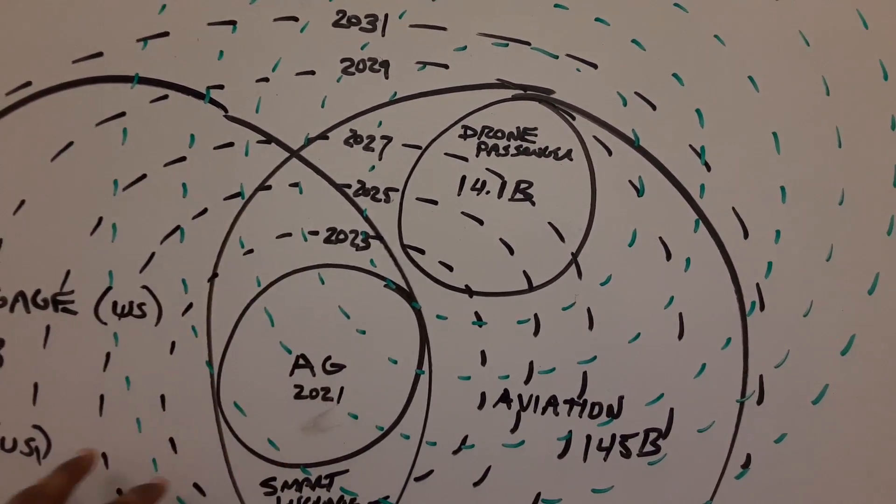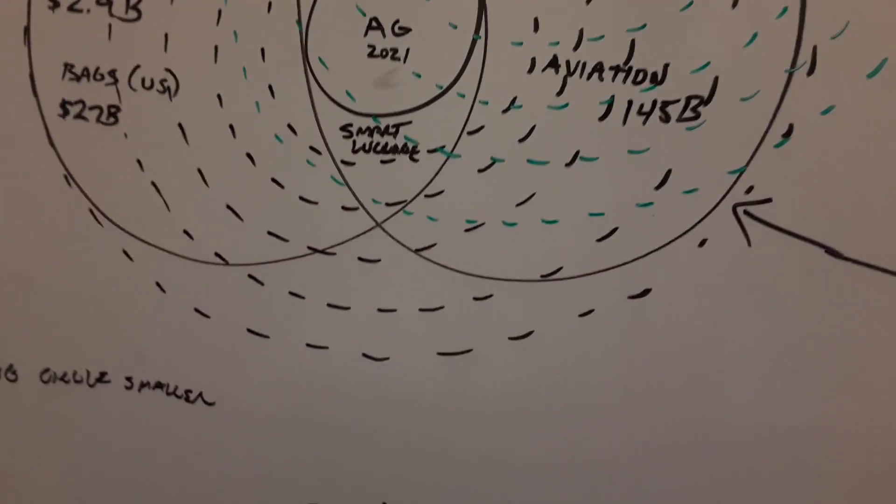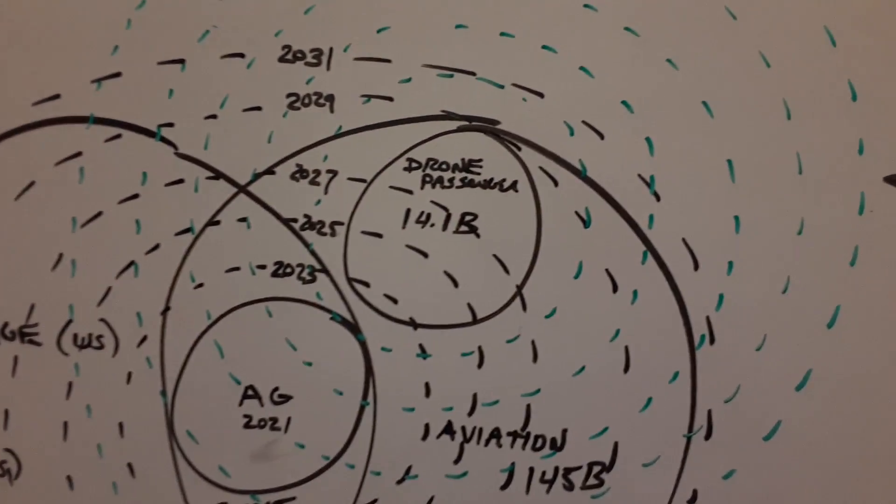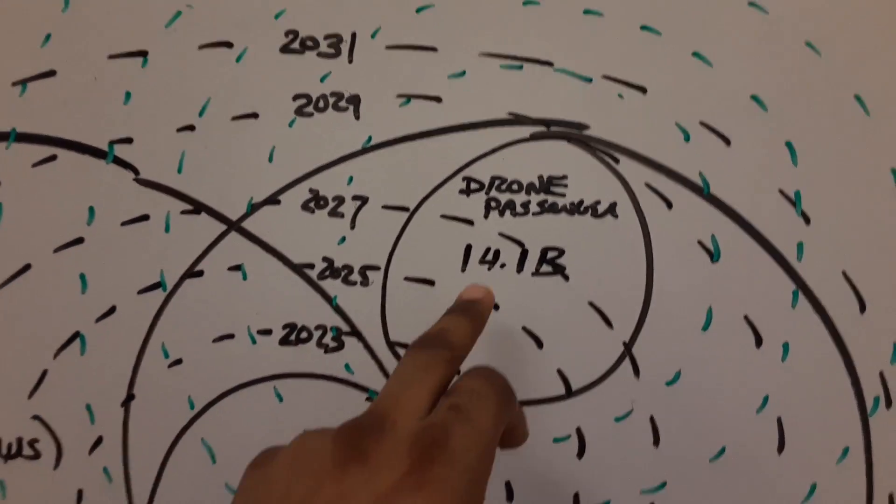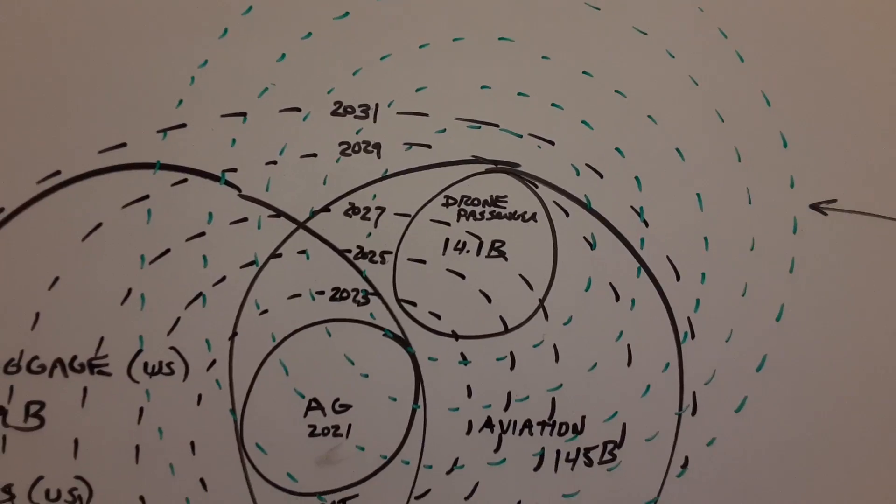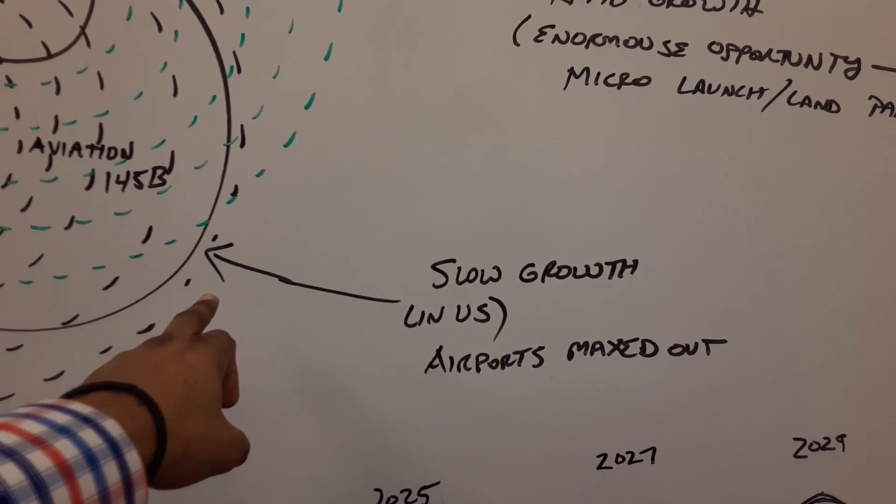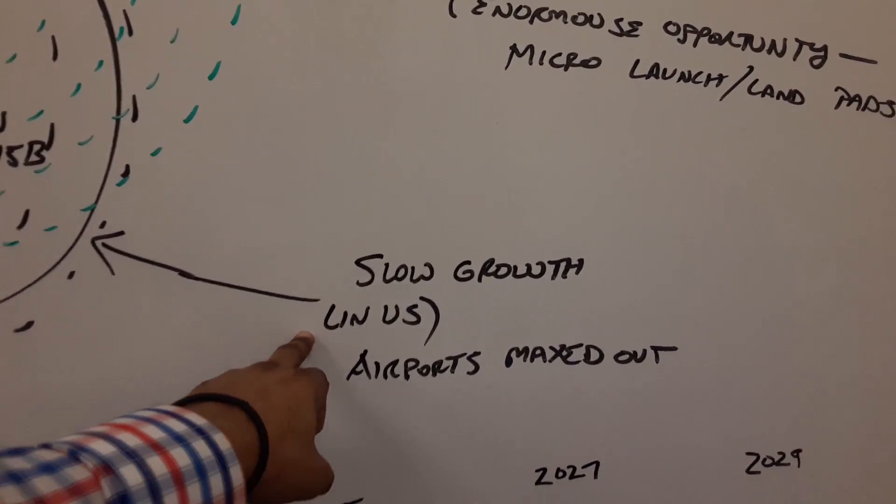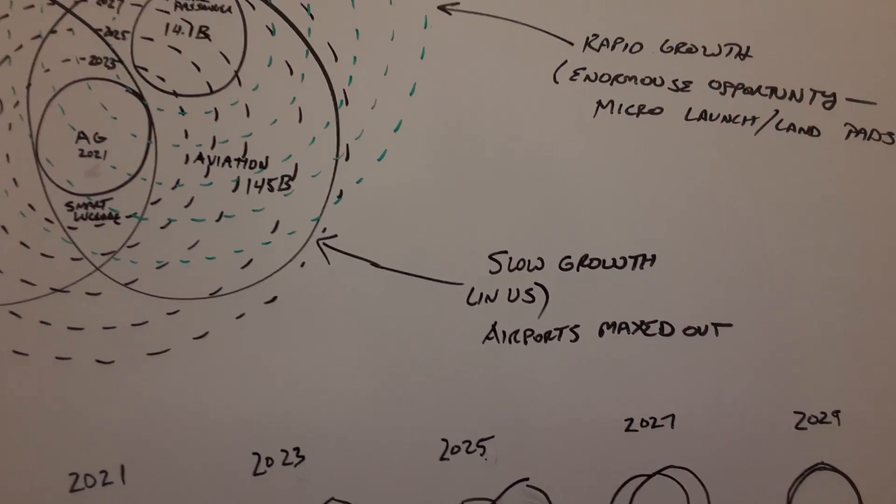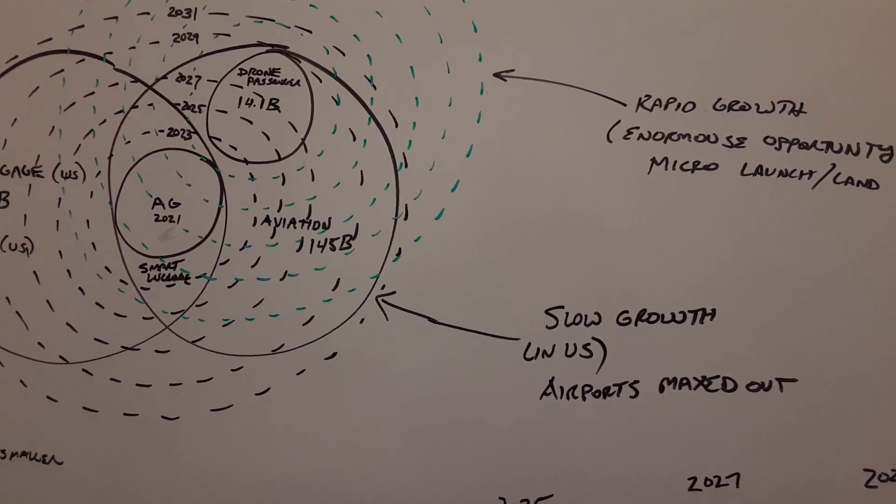There's going to be an overlap between luggage and aviation that's already existing - that's smart luggage. But as you progress through the years, that overlap gets larger and larger due to the drone passenger emerging market. This market, the reason why it's so important with the green dotted circles that grow on the outside, is because the airports, this category, the aviation having to do with commercial flights at airports, they're tapped out.